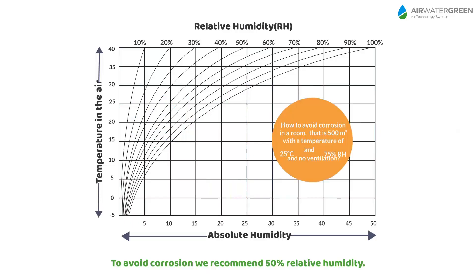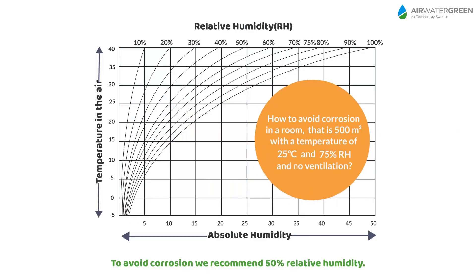Following, we will show you some examples. How to avoid corrosion in a room that is 500 cubic meters with a temperature of 25 degrees Celsius, 75% relative humidity, and no ventilation.